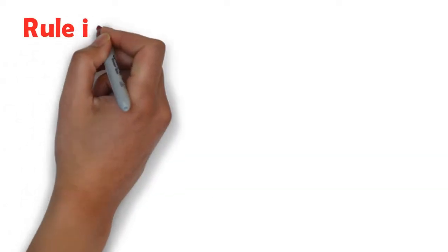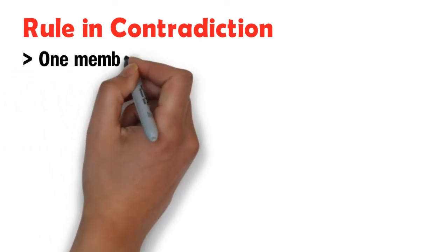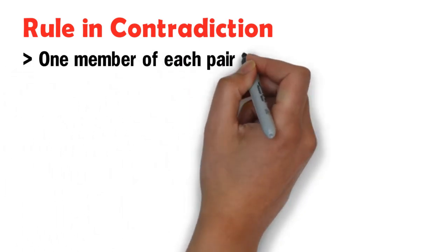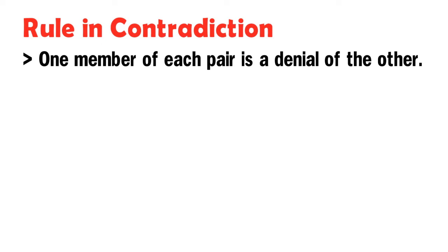Here is the rule in contradiction. One member of each pair is a denial of the other. In other words, if the universal is true, then the particular is false. And if the particular is false, then the universal is true.